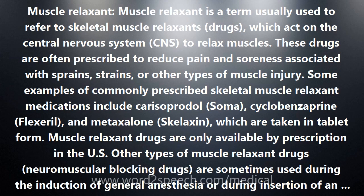Muscle relaxant drugs are only available by prescription in the U.S. Other types of muscle relaxant drugs — neuromuscular blocking drugs — are sometimes used during the induction of general anesthesia or during insertion of an endotracheal (ET) tube. These muscle relaxants are given intravenously through the bloodstream and act directly on the muscles. Examples include succinylcholine (Anectine, Sucostrin), atracurium (Tracrium), and pancuronium (Pavulon).